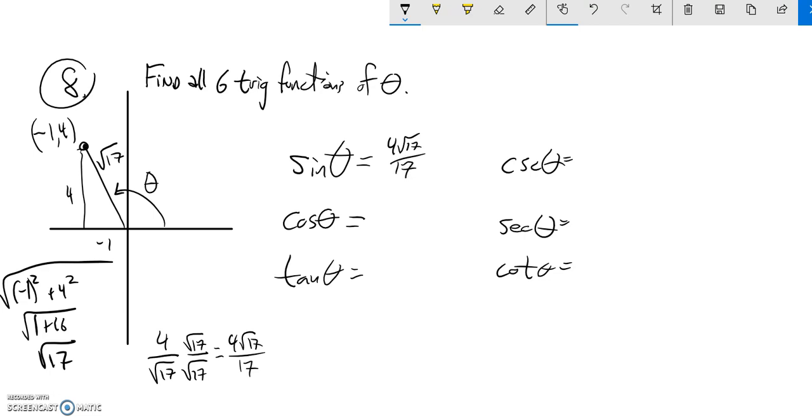And now cosine. Same idea—it's just negative one over that, so negative one over square root of seventeen. Same sort of work: get that square root of seventeen out of the denominator. Negative root seventeen over seventeen.